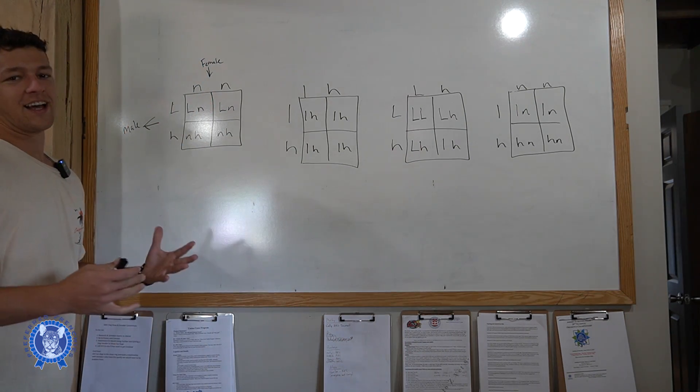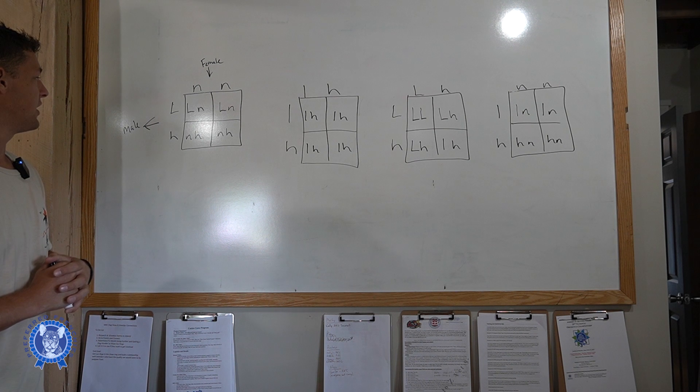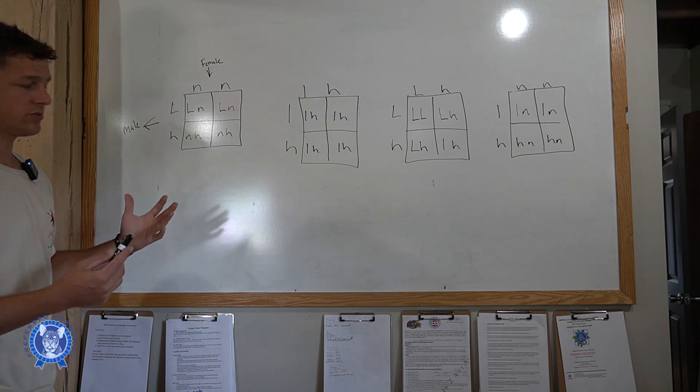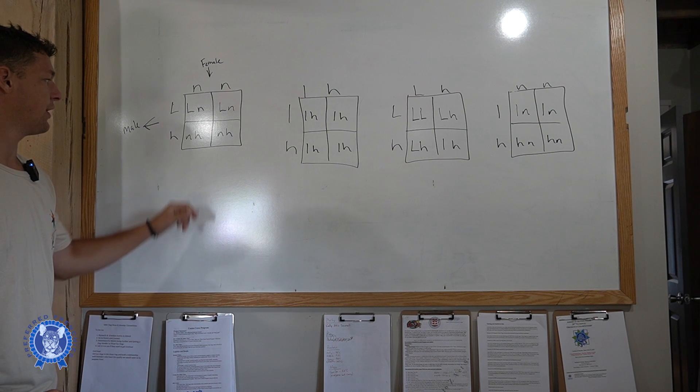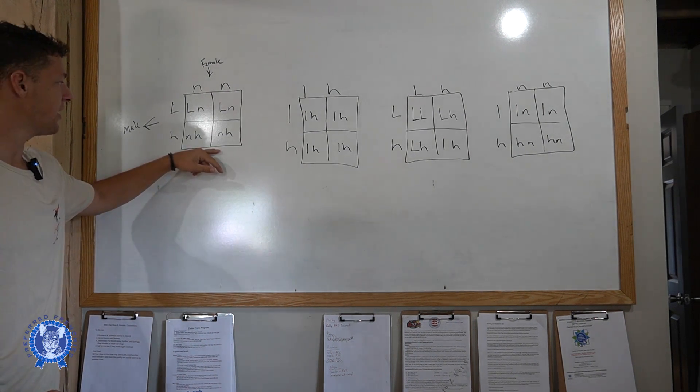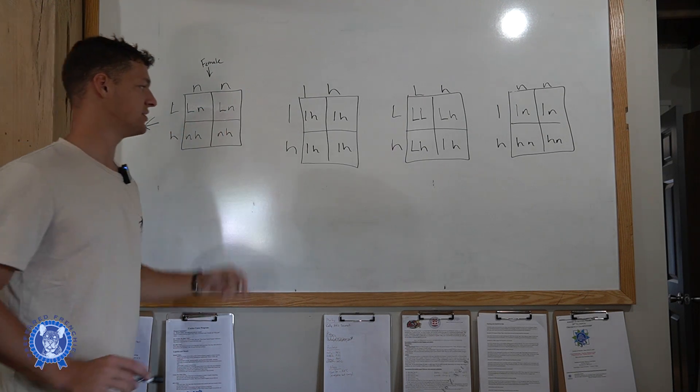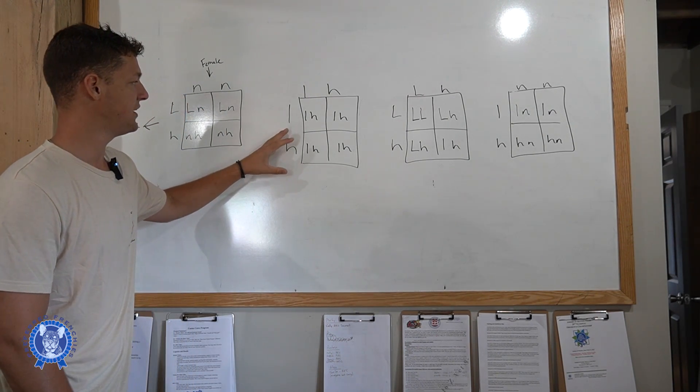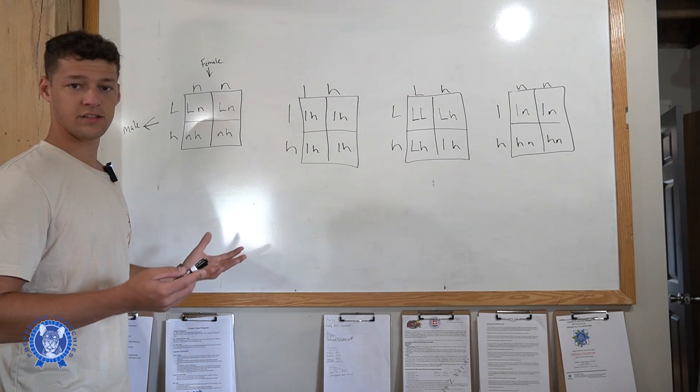So again guys, going through here, going with each pairing here, talking about each one with both combinations. So we have a fluffy carrier bred to a non-fluffy. So you have no chances of having a full fluffy, but you do have a 50-50 shot at getting a fluffy carrier. So you have 50% possibly carrying one copy of fluffy, 50% would probably not have a carrying gene of that. And moving on to both visual fluffy Frenchies bred to each other, you have a 100% chance of getting visual fluffy French Bulldogs.